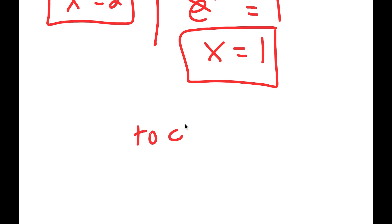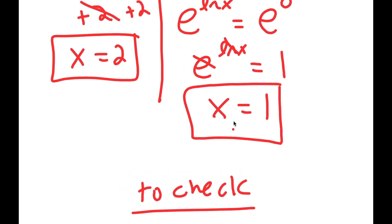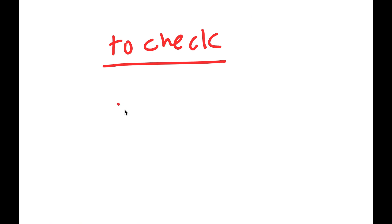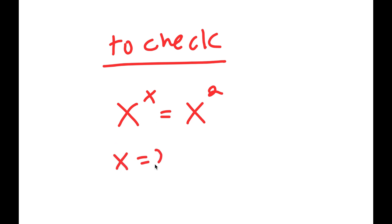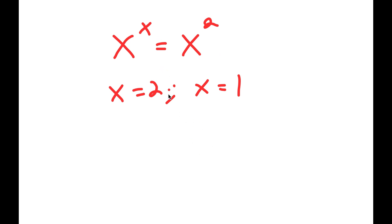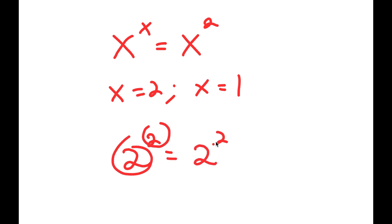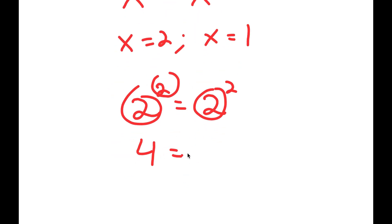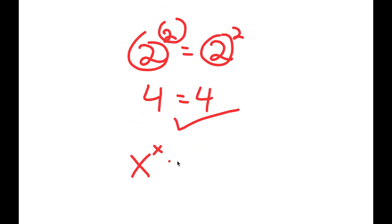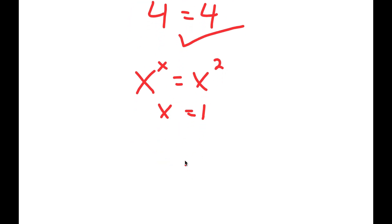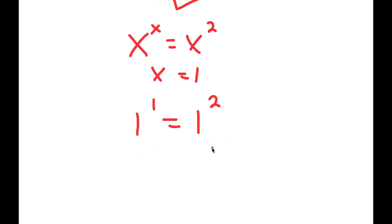Now we have our two solutions, but we have to check if they're right, because sometimes we can get a solution that won't work out in our equation. Our equation was x to the power of x is equal to x to the power of 2, and our solutions were x equals 2 and x equals 1. If I plug in x equals 2, I get 2 to the power of 2 is equal to 2 to the power of 2 — that's 4 equals 4, so this is right. Now plugging in x equals 1, I get 1 to the power of 1 is equal to 1 to the power of 2. And 1 to the power of any number is 1, so I get 1 is equal to 1.